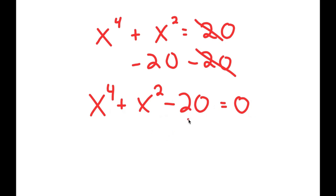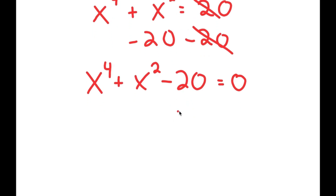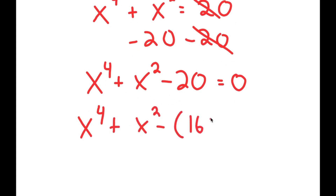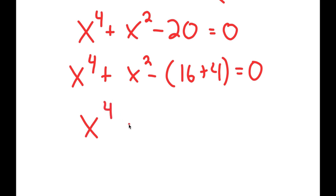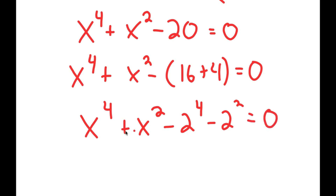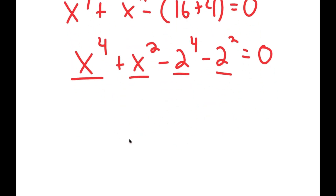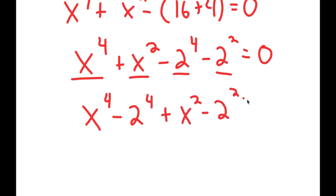We can't use the quadratic formula directly since this isn't a quadratic equation. Instead, I'll rewrite 20 as 16 plus 4, giving x^4 plus x^2 minus 16 minus 4. The reason is that 16 equals 2^4 and 4 equals 2^2. I can now group the powers of 4 together and powers of 2 together, getting x^4 minus 2^4 plus x^2 minus 2^2 equals 0.